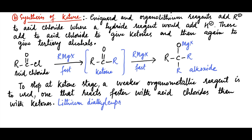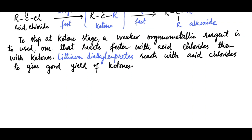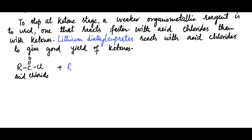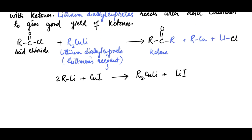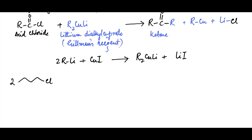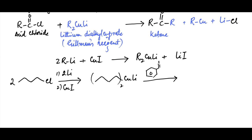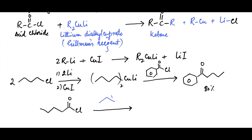Lithium dialkylcuprates and other organocuprates react with acid chlorides to give good yields of a wide variety of ketones. For example, when an acid chloride is treated with lithium dialkylcuprate, also called Gilman's reagent, it forms a ketone. The lithium dialkylcuprate is formed by the reaction of two equivalents of the corresponding organolithium reagent with cuprous iodide. For example, an alkyl chloride treated with lithium and copper iodide forms Gilman's reagent, which then adds to an acid chloride to form a ketone in 80% yield. Similarly, another acid chloride on treatment with a lithium dialkylcuprate forms the corresponding ketone.